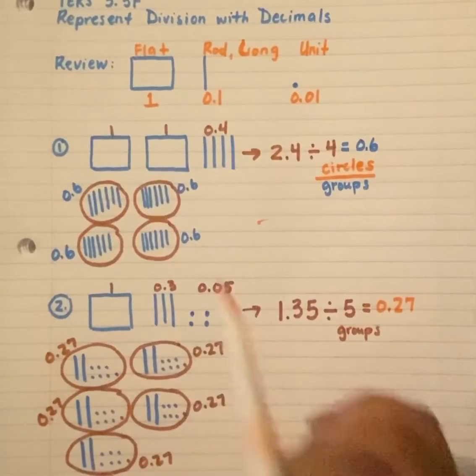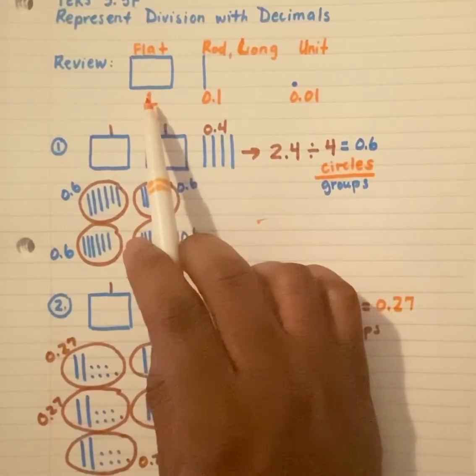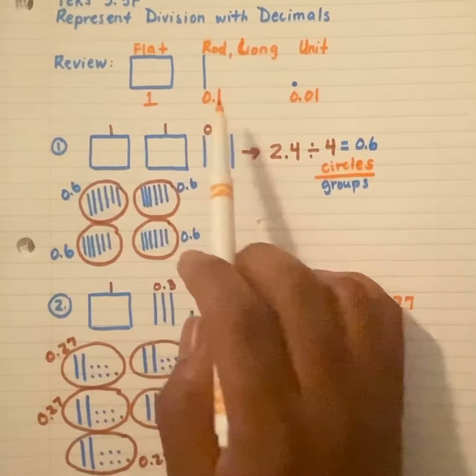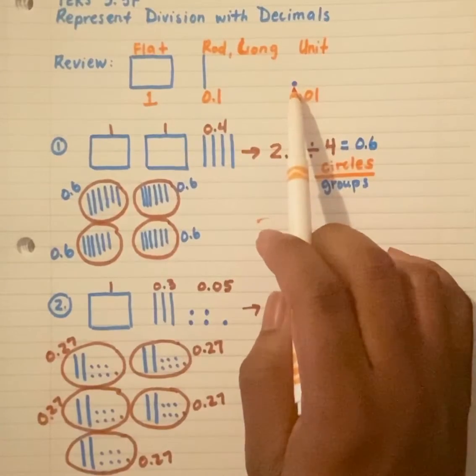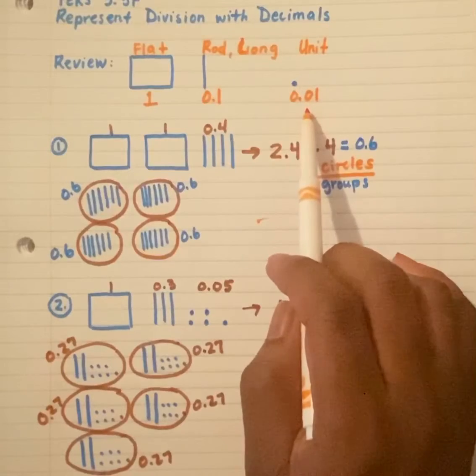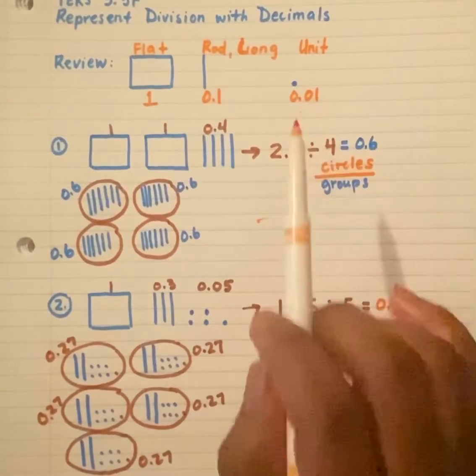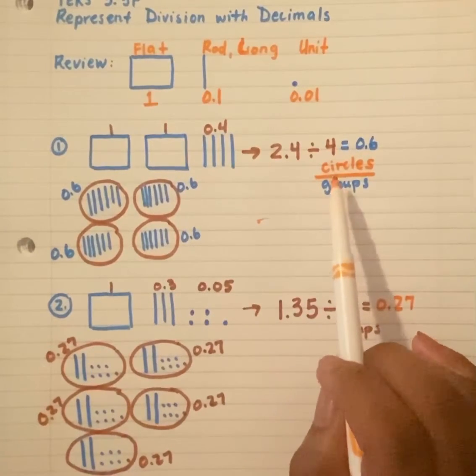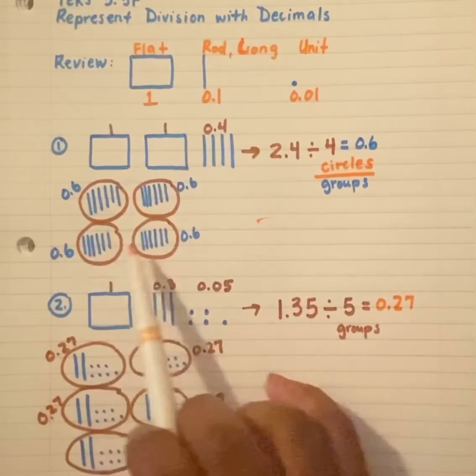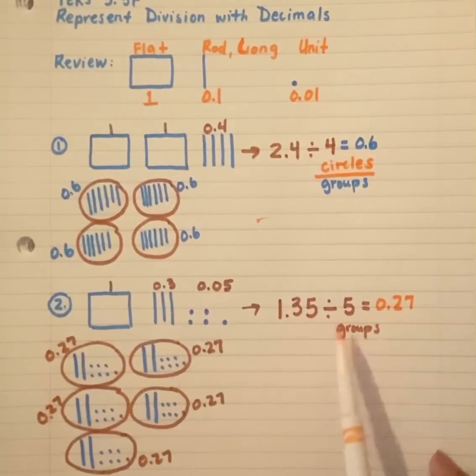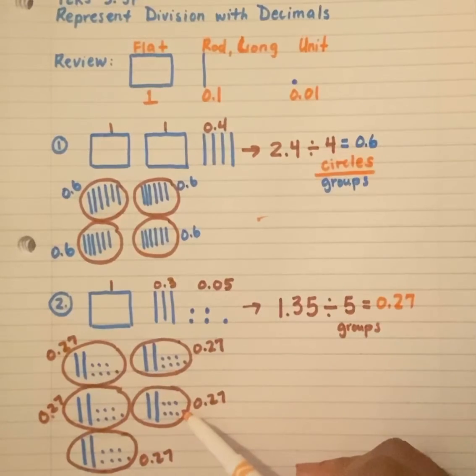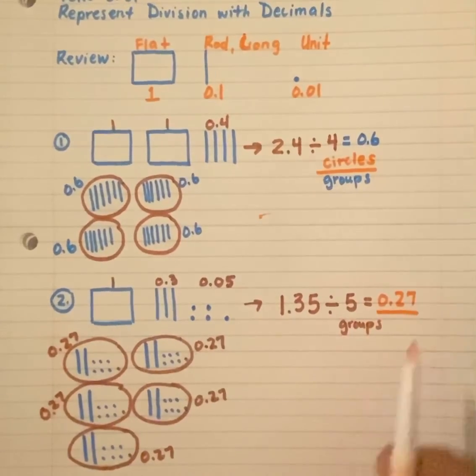So just remember, the flat represents one whole. The rod or the long represents one-tenth or a dime. And then our unit, which looks like this, typically a square or a circle, represents one-hundredth or penny. Also, remember, this number here represents our circles or our groups. I know it's four groups because it showed me four circles. I know it's five groups here because it had five circles. And then what's inside the circle is going to be my answer. Each circle should have the same amount. And that is going to be our answer or our quotient for these problems.